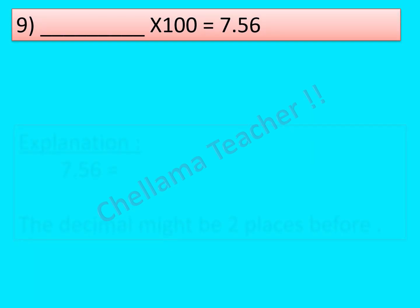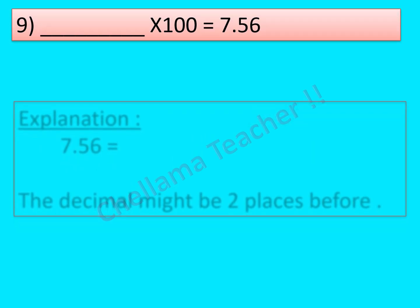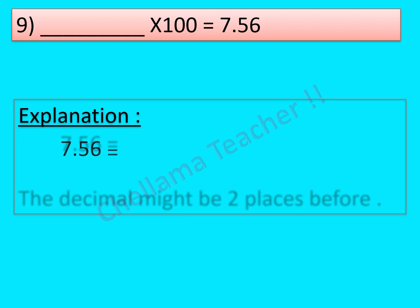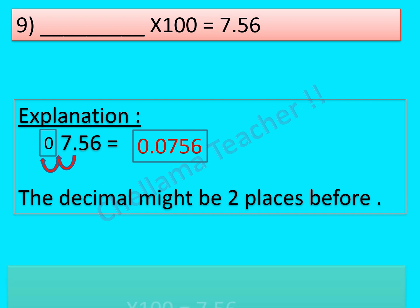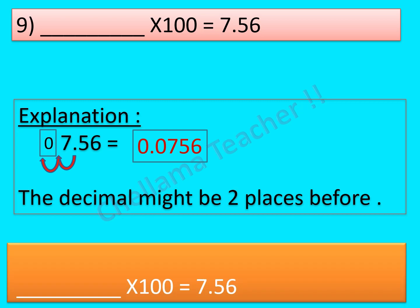Question No. 9: Dash × 100 is equal to 7.56. Which number is to be multiplied by 100 to get 7.56? The decimal must be 2 places before the current position — before multiplying by 100. So the answer is 0.0756.